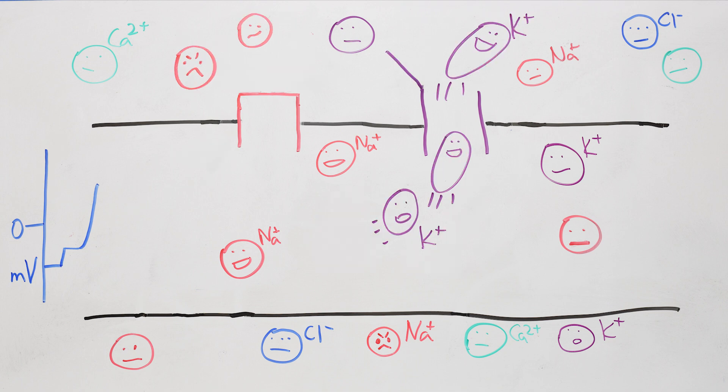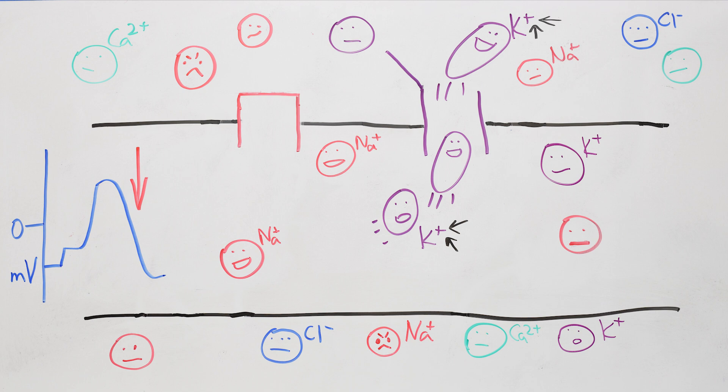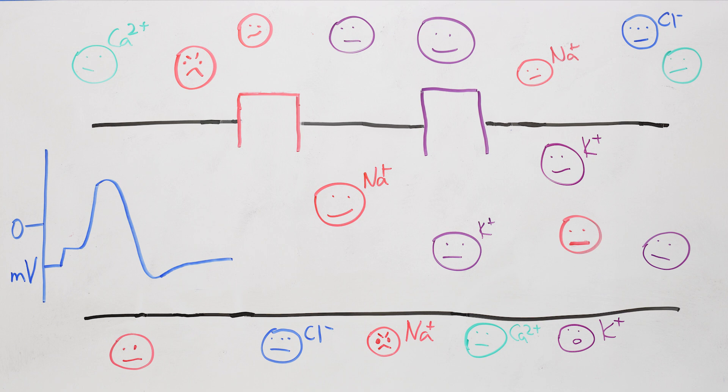So inside the neuron the total charge and the voltage drops and overshoots. Eventually the potassium channels close and everything levels off. And then the channels take some time to reset and get ready for the next spike.